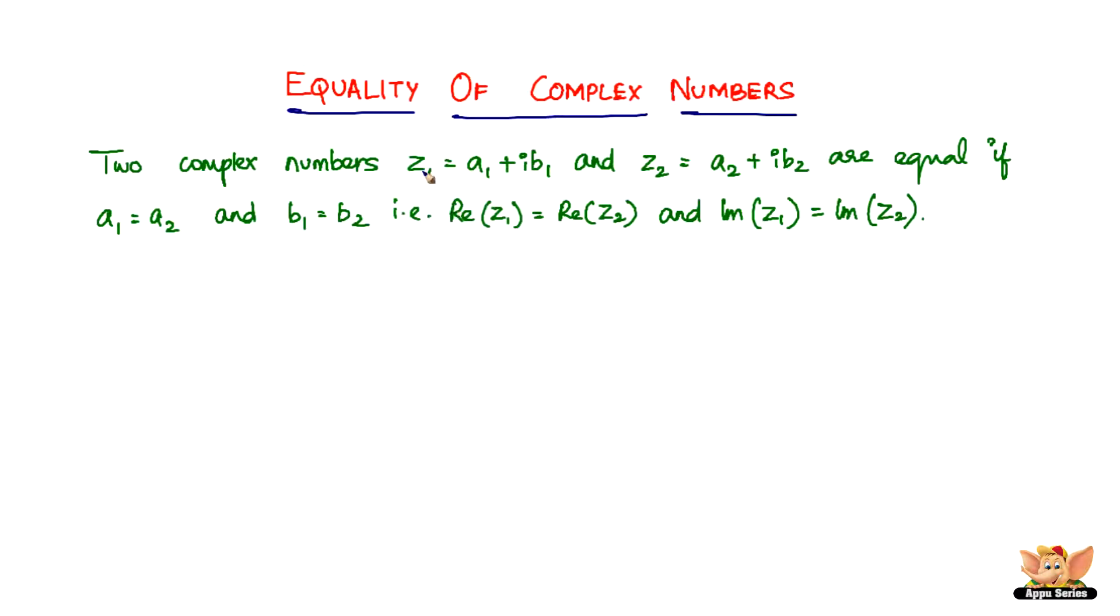In other words, the real part of z₁, which is a₁, should be equal to the real part of z₂, which is a₂. And the imaginary part of z₁, which is b₁, should be equal to the imaginary part of z₂, which is b₂.